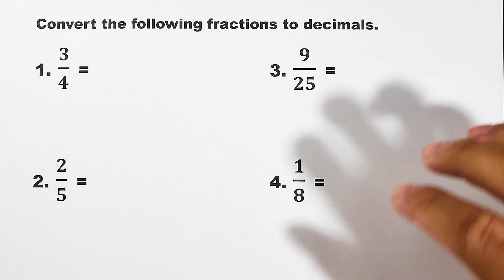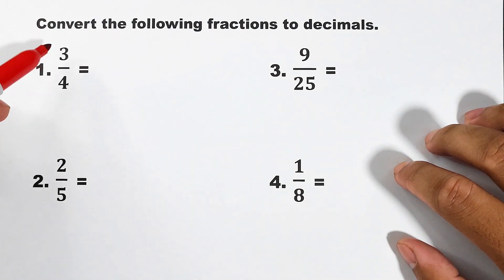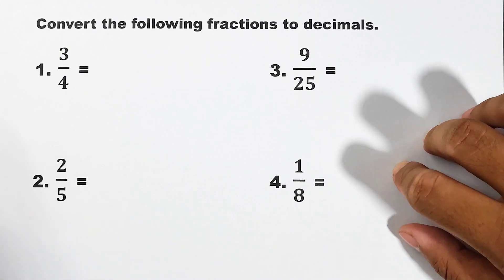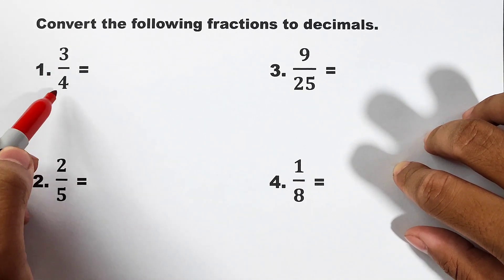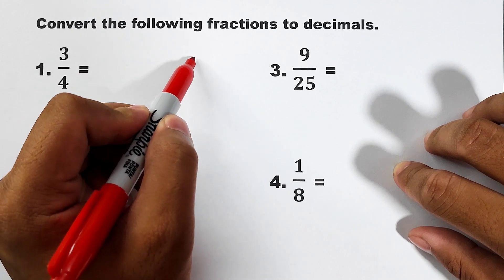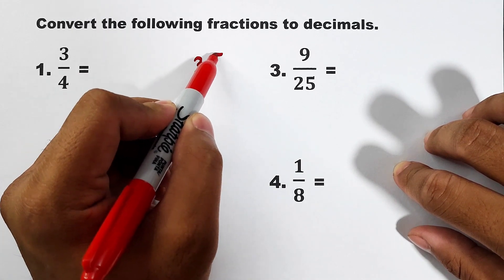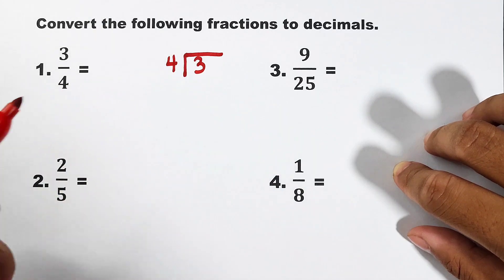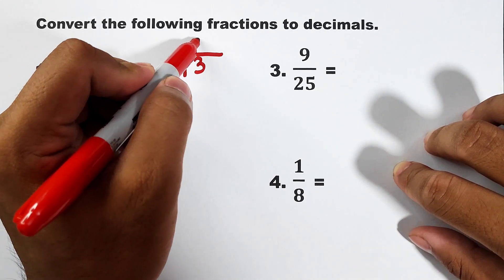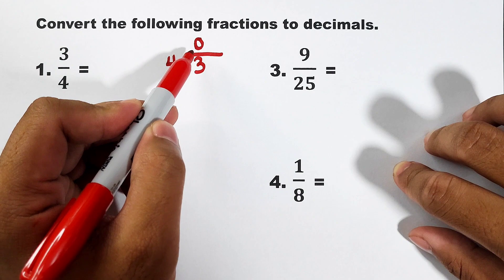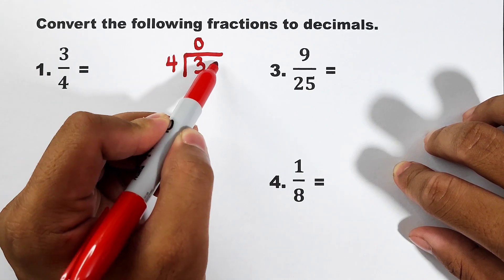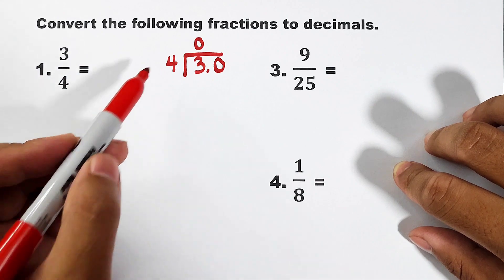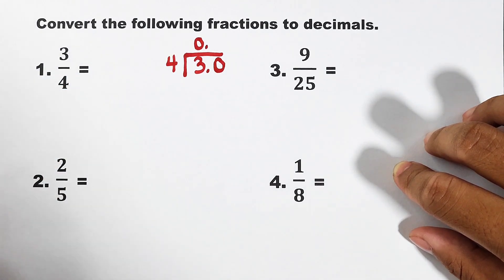In number one, we are asked to convert three over four. How to do it using long division? We will divide three by four, like this one, three divided by four. Three divided by four is zero. Since this is zero, we will extend this one by zero. And don't forget the decimal point. And also, put a decimal point here.